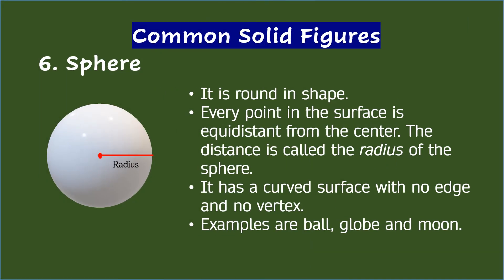6. Sphere — it is a solid figure which is round in shape. Every point on the surface of a sphere is equidistant from the center. This distance is called the radius of the sphere. A sphere has a curved surface with no vertex and no edge. Common examples of objects that resemble a sphere are a ball, globe, and moon.